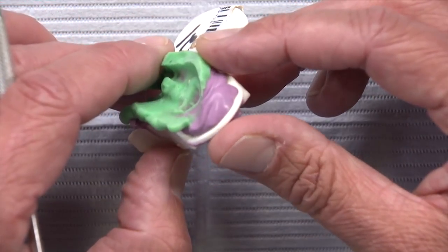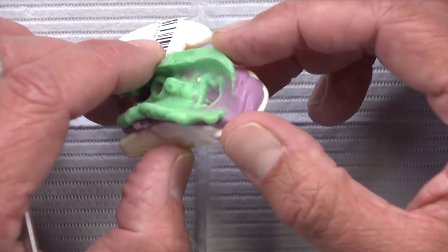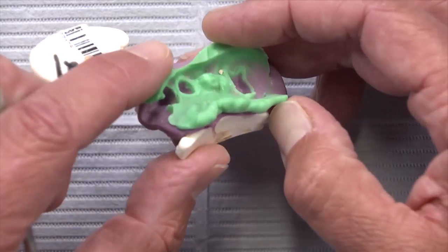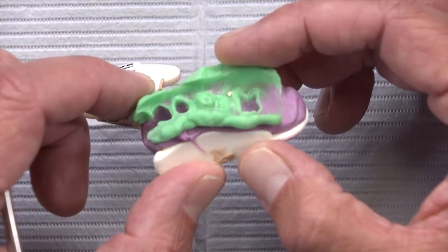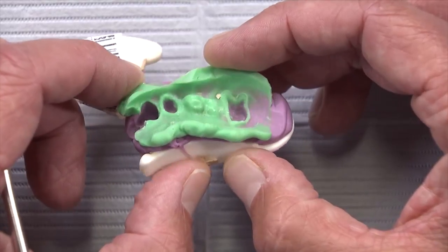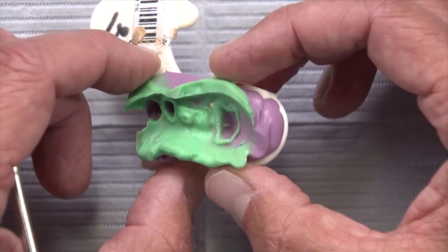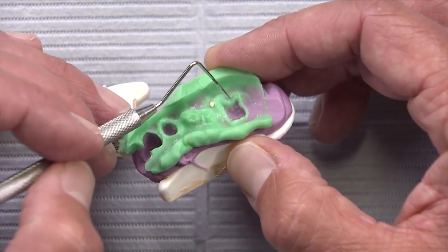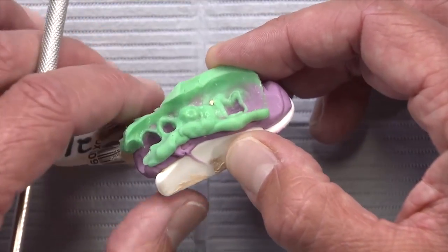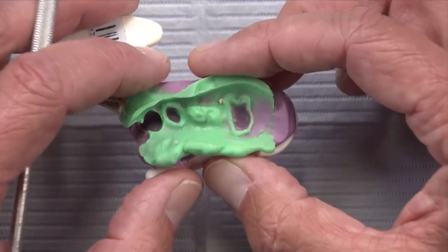And on the mesial, the same thing. It becomes very difficult to trim those dies if we don't have that material beyond the margin. So, as we look around, a lot of what we see here does not have that flash material beyond the margin. Even just a little like this is really helpful on the buckle aspect of that molar for getting something cleaner.